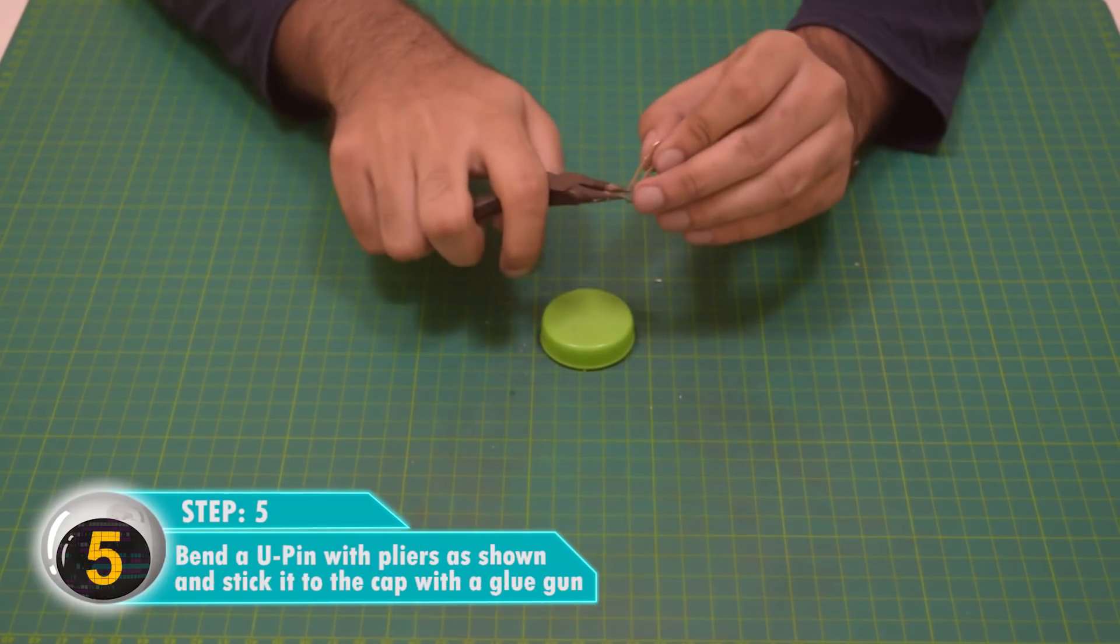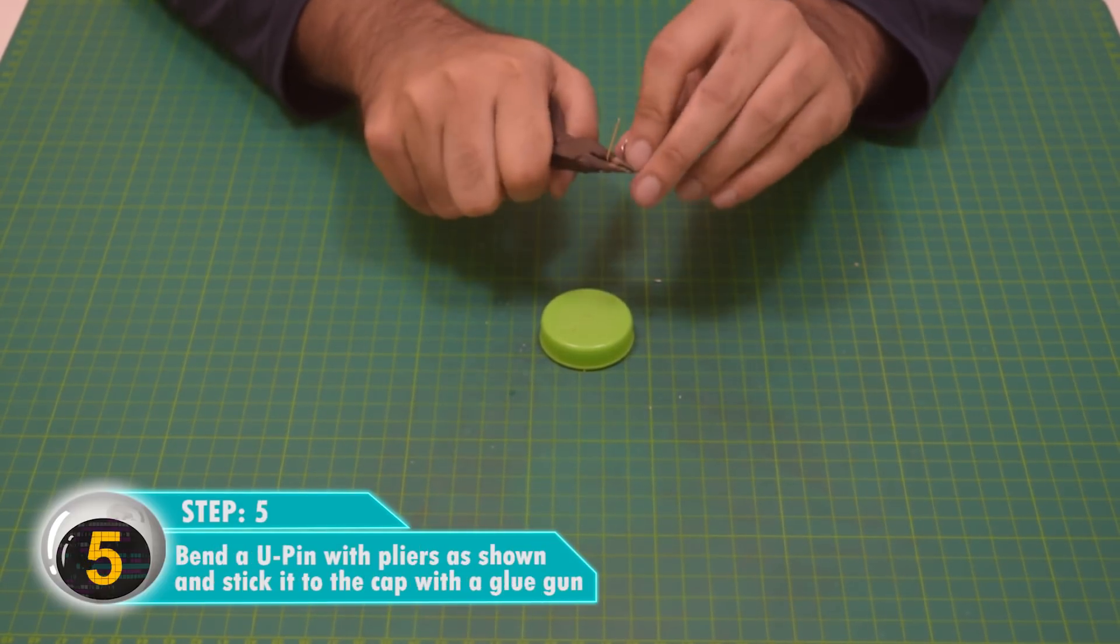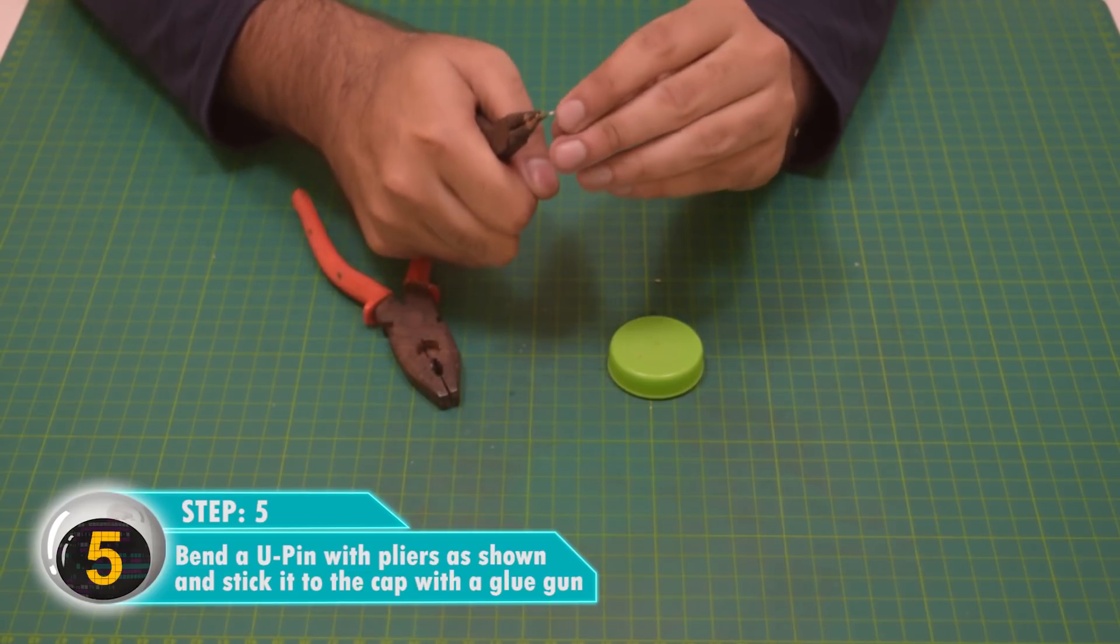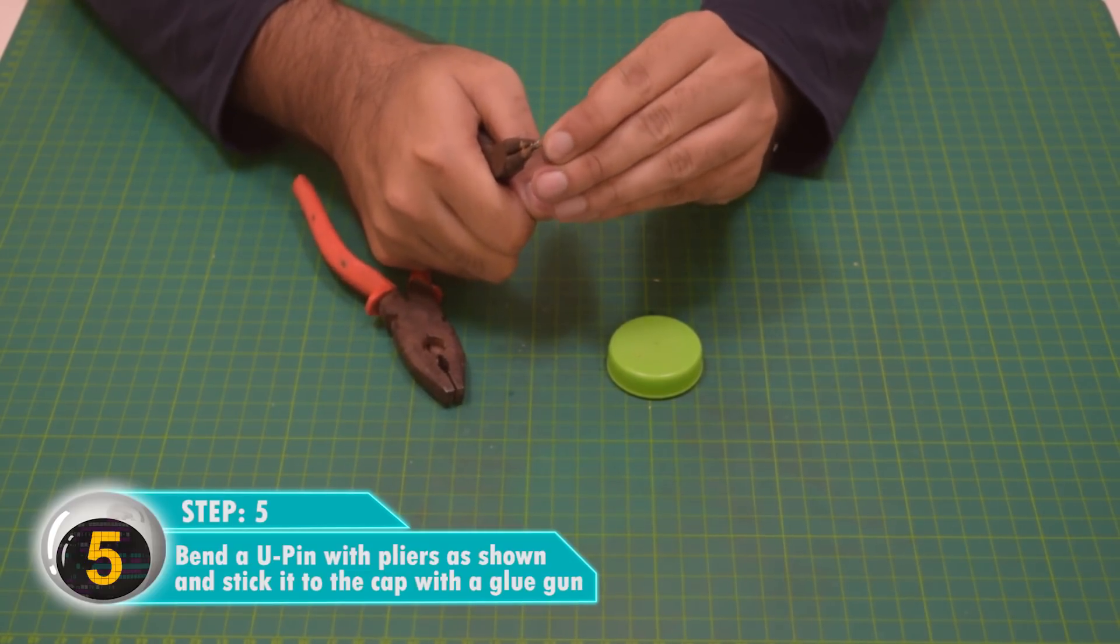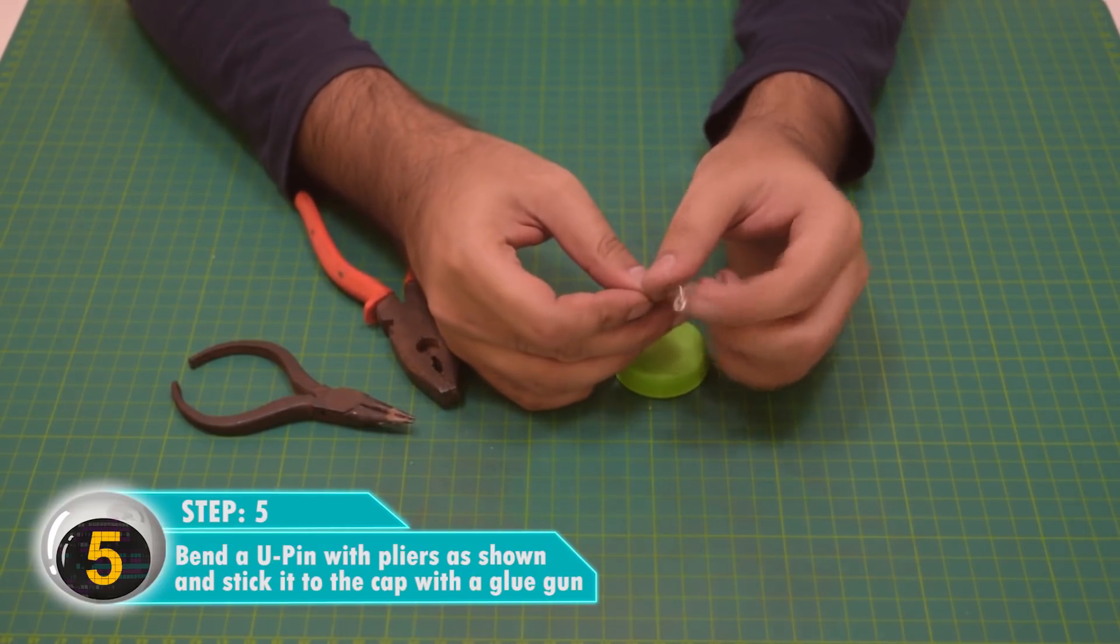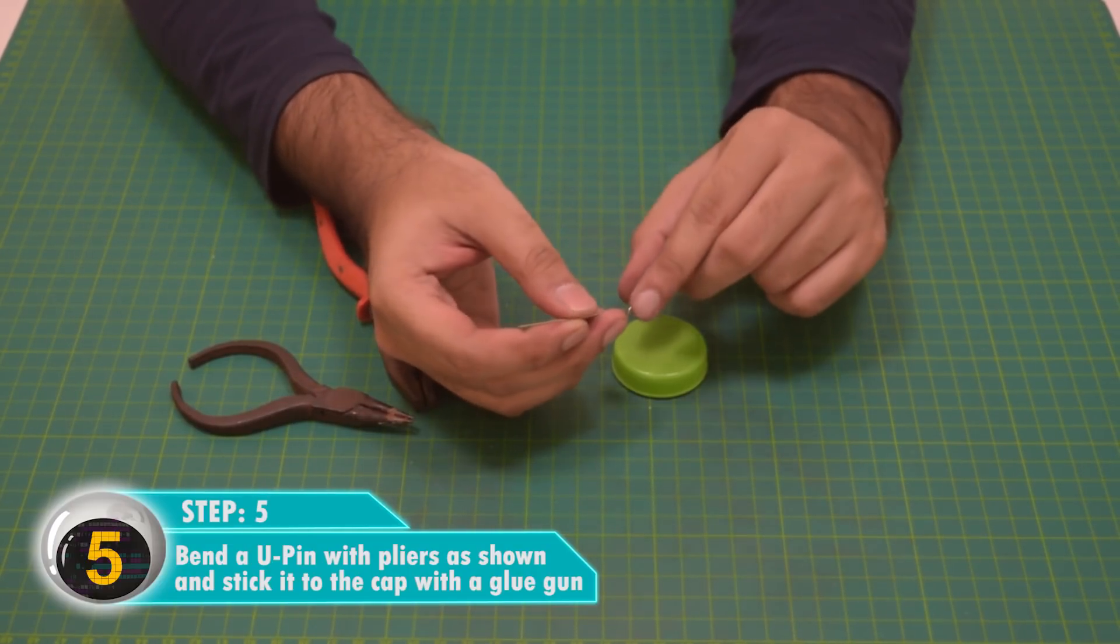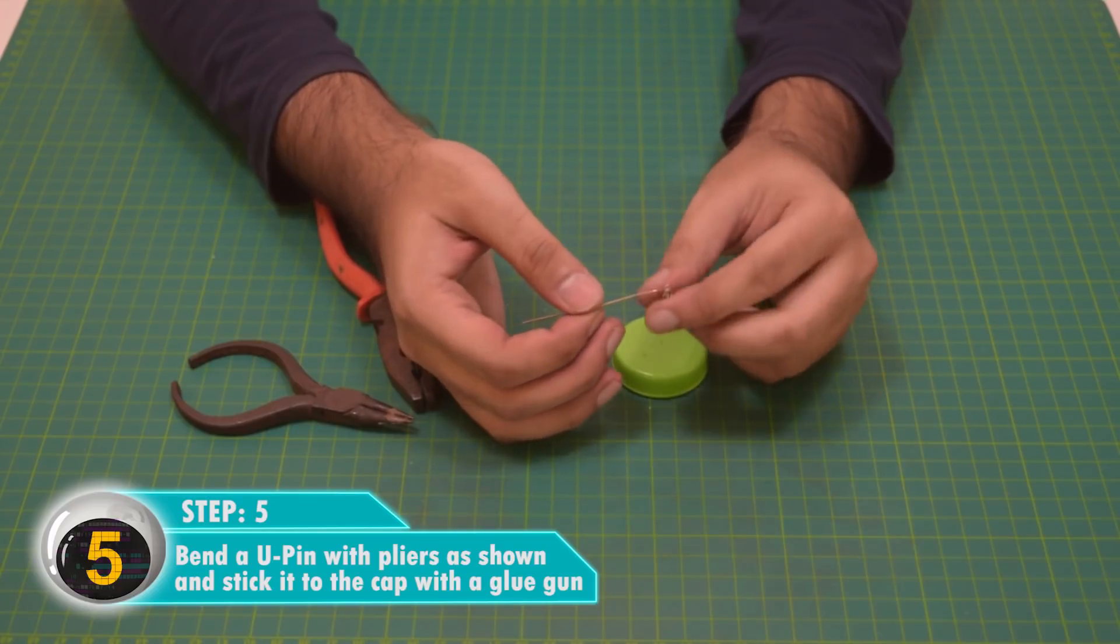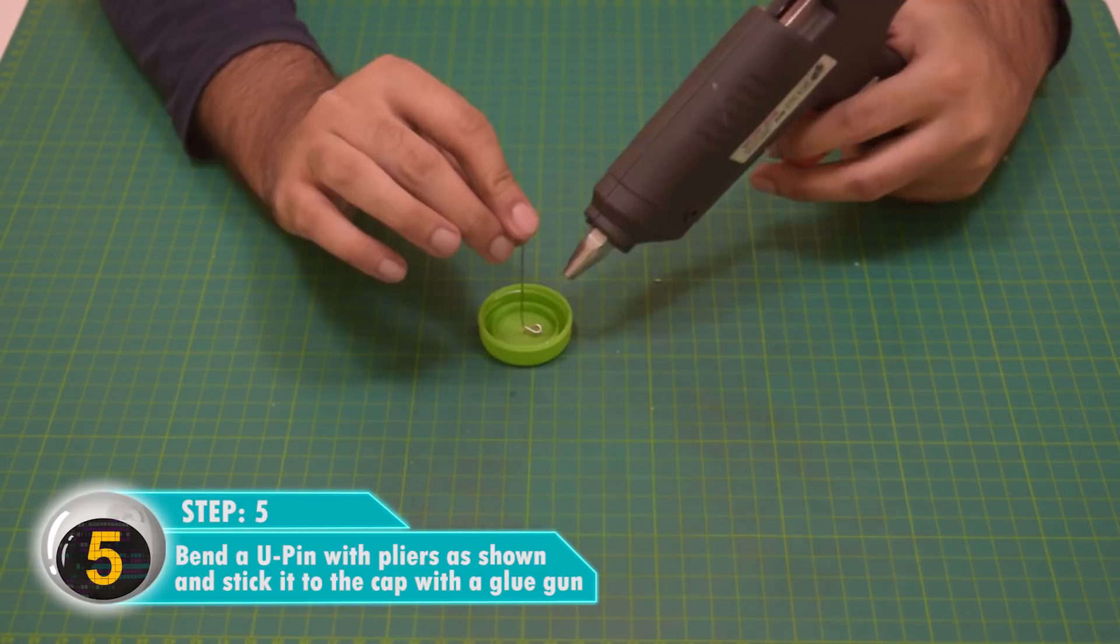Now we will bend a U-Pin with a pair of pliers as shown, and we will stick it to the cap using a glue gun. What do you use if you don't have a glue gun? You can use some super glue if you have, yeah, but be very careful with that again, right? Yeah, okay.